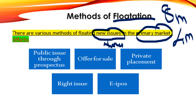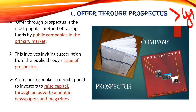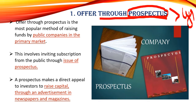The five methods of flotation are: public issue through prospectus, offer for sale, private placement, right issue, and EIPO (Electronic Initial Public Offer). The first method is offer through prospectus — this is how the company asks the public to invest money. Prospectus can be a magazine, brochure, or newspaper advertisement where the company publishes details including the share price, company history, balance sheet, and profit and loss details.